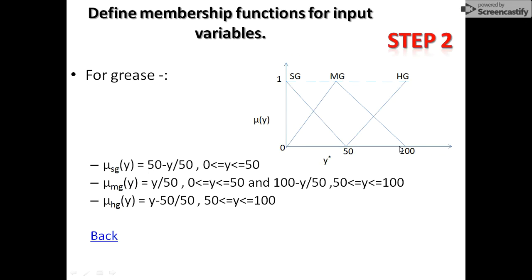In the same way, we calculate for grease also. We have changed the linguistic variables to small grease, medium grease, and high grease, but the values are the same. For the first triangle: (50 − y) / (50 − 0). For the ascending part: (y − 0) / (50 − 0). For the descending side of the middle: (100 − y) / (100 − 50). For the ascending side of the third triangle: (y − 50) / (100 − 50). Accordingly, you find out the range of y in each case.